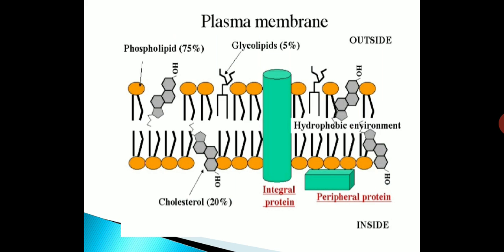Here we can see the plasma membrane. Here the different layers are shown. Phospholipid content is about 75%. Glycolipids are about 5%. And in the outside of the cell membrane, the hydrophobic environment is there. And the inside of cell cholesterol is there about 20%. And here I have shown integral protein and peripheral proteins also.